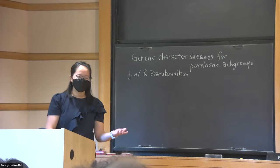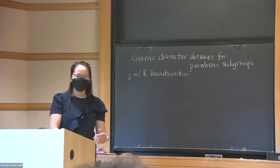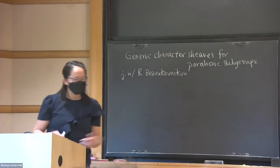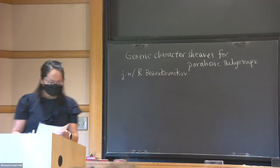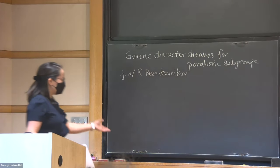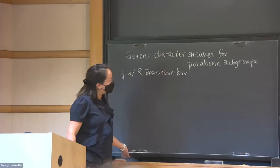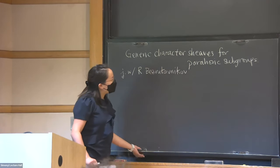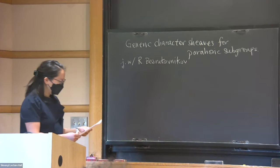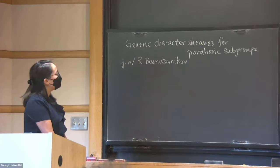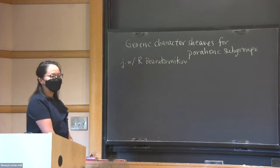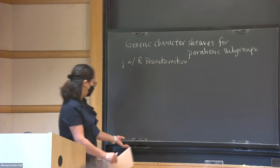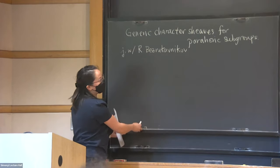Thank you for the introduction and for the invitation. It's really an honor to be here and give a talk in front of such an audience. I'd like to talk about recent joint work with Roman Bezrukavnikov, and the place I'd like to start is about representations of finite groups of Lie type, which is due to Deligne and Lusztig. Let me say a little bit about that first.